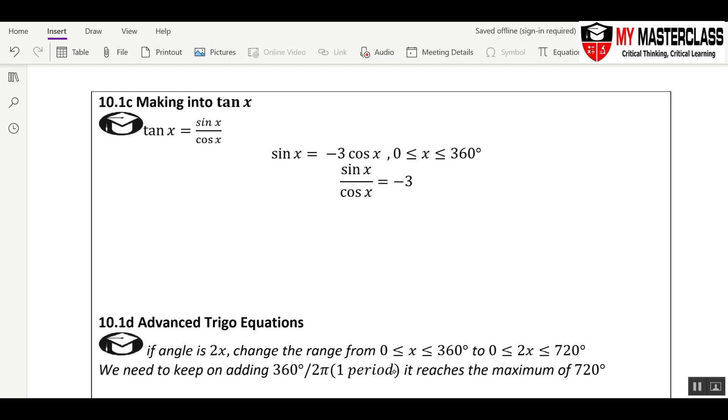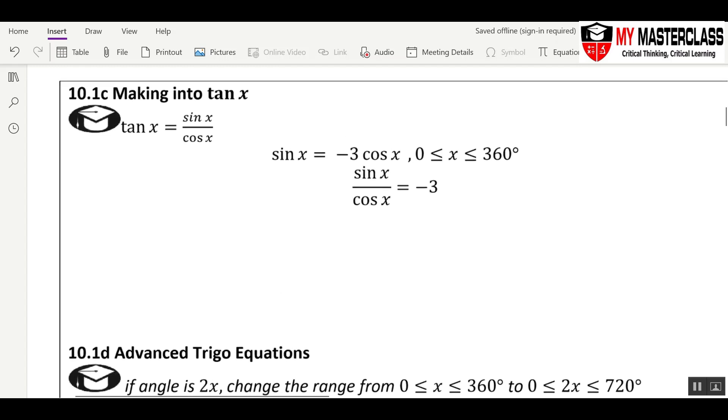When sine and cosine appear together in an equation, we have to think of trying to form them into tangent x. There are two ways; another way you will learn later in our formula. First, you must know that tangent x is an identity equal to sine x over cosine x.